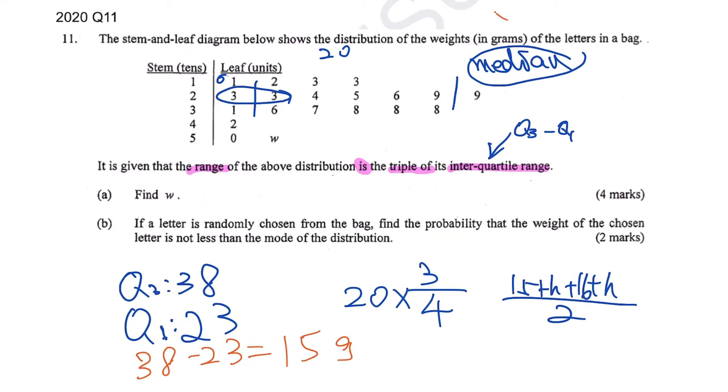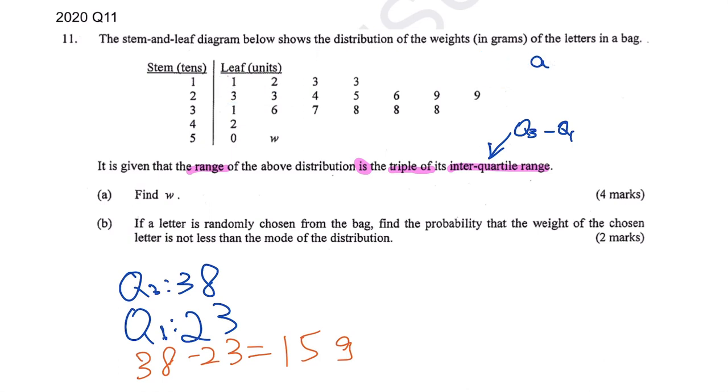How about range? Range means the maximum minus the least one. So what is your maximum? Your maximum is 50 plus w minus the least one, which is 11. So this is your range. The question states range equals three times your IQR. So 50 plus w minus 11 equals 3 times 15. Afterwards, unknowns on one side, numbers on the other side, so you get w equals 6.